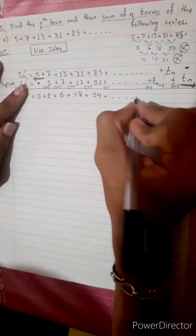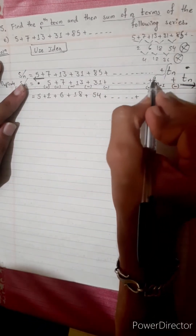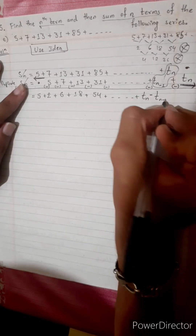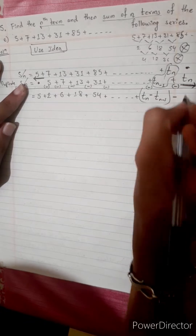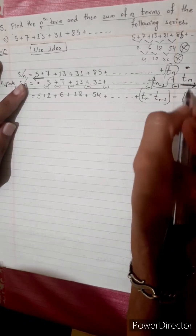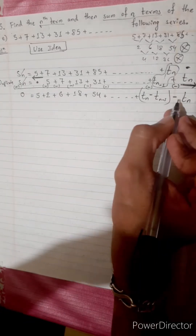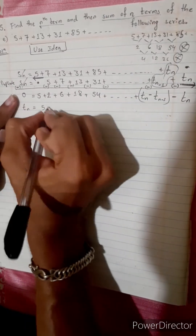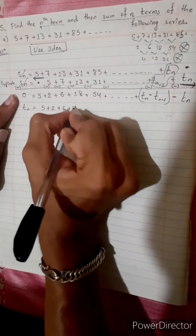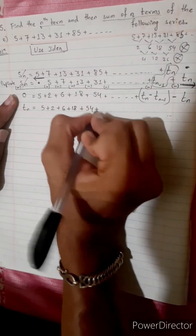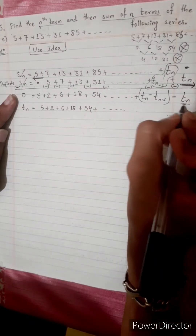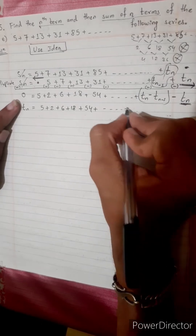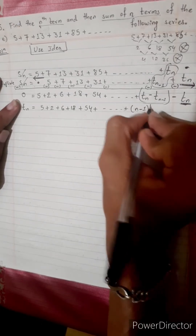Continuing the subtraction: plus dot dot dot, Tn minus Tn-1. This last term is the nth term and the previous is the n minus 1th term. So Tn equals 5 plus 2 plus 6 plus 18 plus 54 plus dot dot dot up to the n minus 1th term.